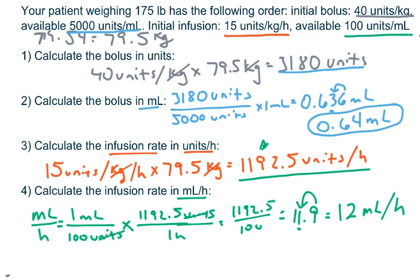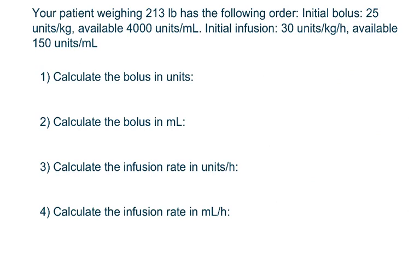Going forward, the problems follow the same steps — you may want to pause and work them yourself. For problem two, the patient weighs 213 pounds, with an order for an initial bolus of 25 units per kilogram with 4,000 units per milliliter available, and an infusion of 39 units per kilogram per hour with 150 units per milliliter available.